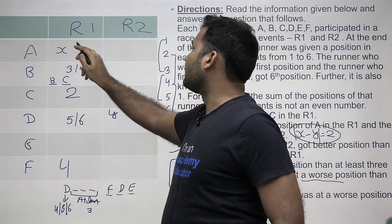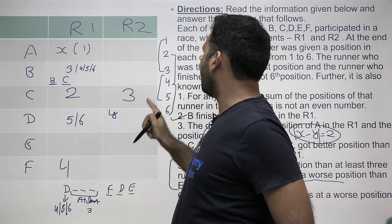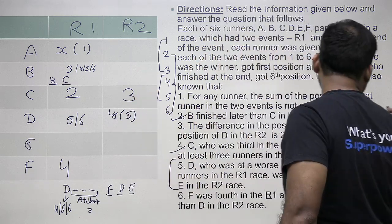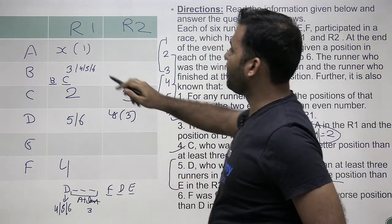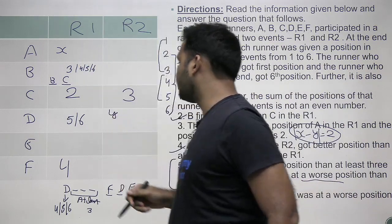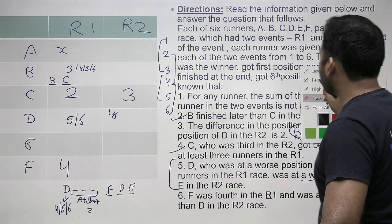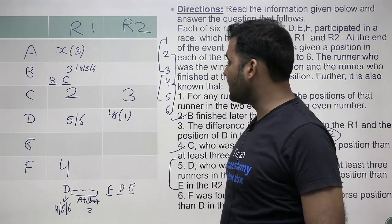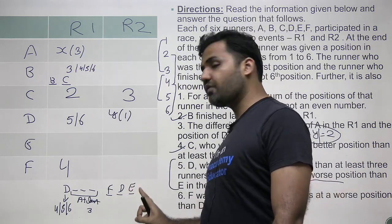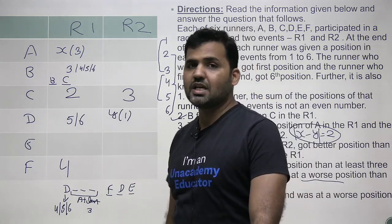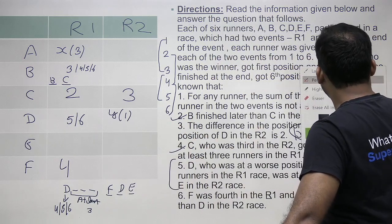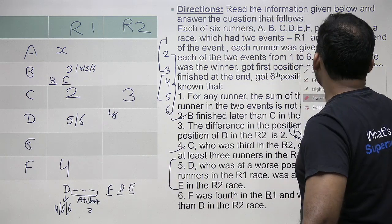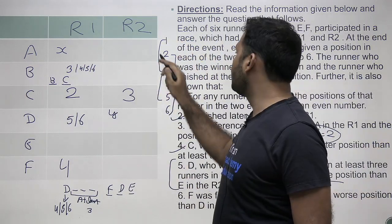If A's rank in R1 is 1, we'd need D's rank in R2 to be 3 — but 3 is already used by C, so this is eliminated. What if A=3 and D=1? We'd need D's R2 rank to be 1, but D finishes after E in R2, so D cannot have rank 1 — this case is also eliminated. So the pair (1,3) and (3,1) are both eliminated.